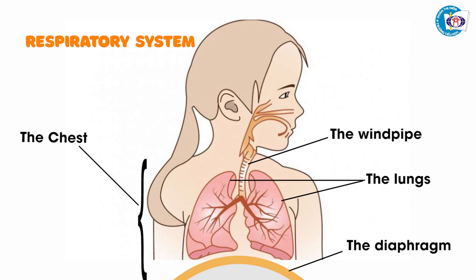the lungs and the diaphragm. The chest protects the lungs. The windpipe is like a pipe for air from our mouth and nose to the lungs. The lungs let the body get oxygen and get rid of carbon dioxide.